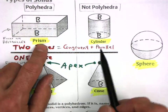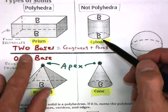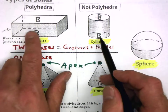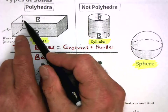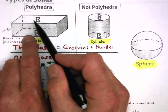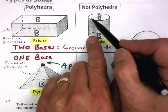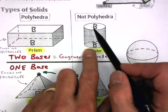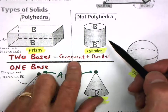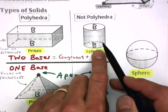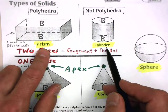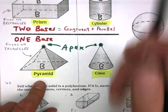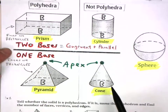You will remember that prisms and cylinders both have two bases. Those bases have to be congruent and parallel. Here are two surfaces that are congruent and parallel, so we call these the bases. That's prism and cylinder, in contrast to pyramid and cone — pyramid and cone only have one base.